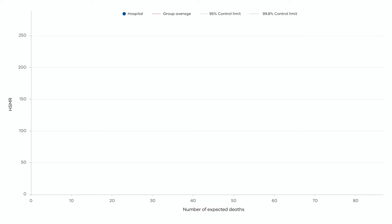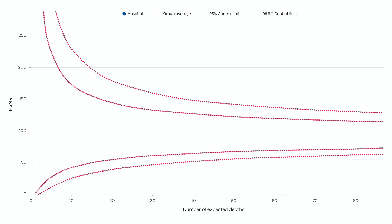Just like the adjusted rates in bar charts, 100 is the baseline each health service is working to. These lines in the shape of a funnel, where the chart gets its name from, provide the boundaries of an area in which the health service's results are expected to appear.